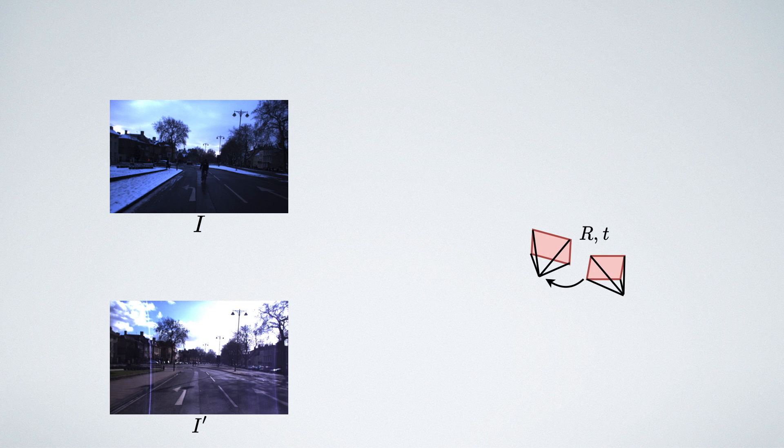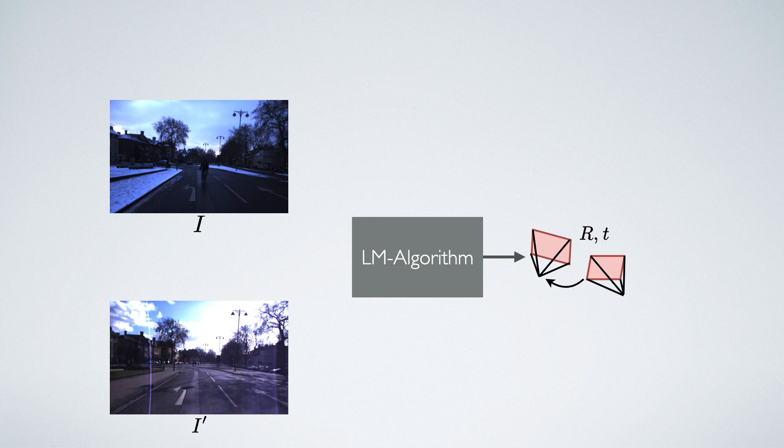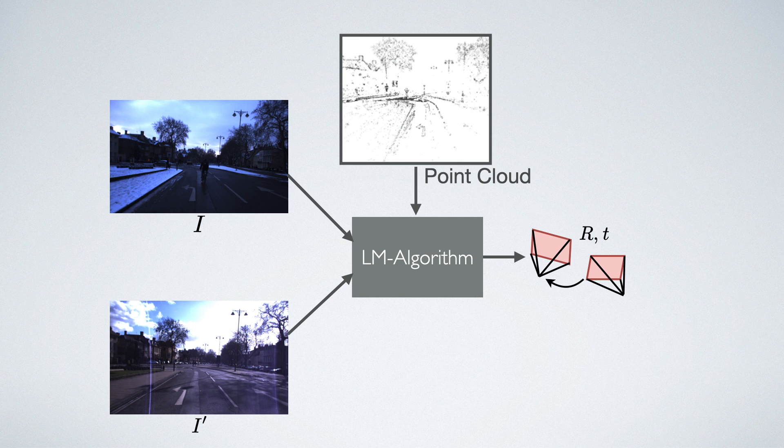This is done with direct image alignment using the Levenberg-Marquardt algorithm. It gets the two images as input and also a sparse point cloud, in our case created by direct sparse odometry.